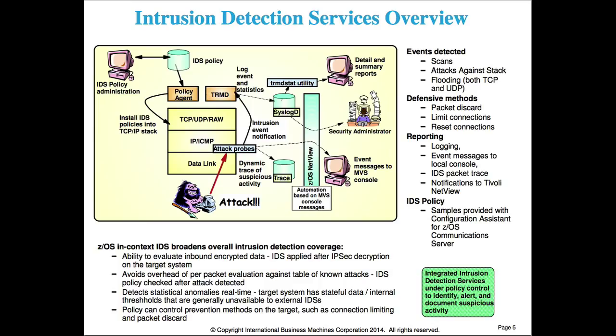The diagram on this slide shows components involved in CommServer's intrusion detection services. Starting at the left-hand corner, the Configuration Assistant can provide a mechanism for configuring your IDS policy. The policy agent then reads the policy and installs it into the TCP/IP stack. Once installed, the stack makes the appropriate checks and takes configured actions, which fall into two categories: defensive actions such as discarding a packet, limiting connections, or resetting connections; and reporting actions — event messages to the MVS console or written to syslog daemon.